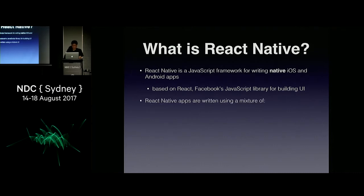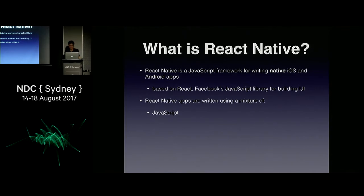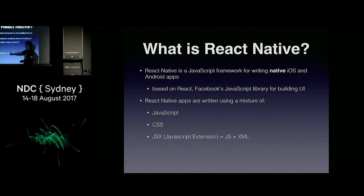React Native apps are written using a mixture of JavaScript, CSS, and JSX. JSX is basically a combination of JavaScript plus XML. In the past we might have called this spaghetti code, but it's really cool. React Native translates your UI markup to native UI elements, and hence your app is a pure native app.